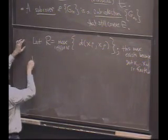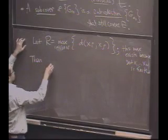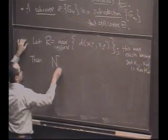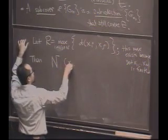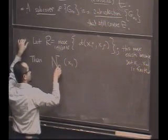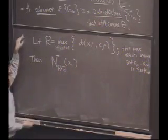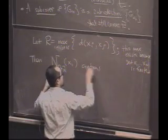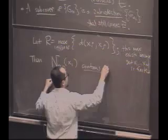Okay, so then here's the ball. We claim, sorry, some big ball around x1 of radius, how about big R plus 2? That would do, wouldn't it? It contains all k.